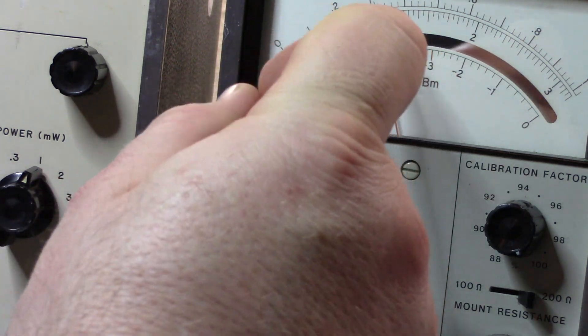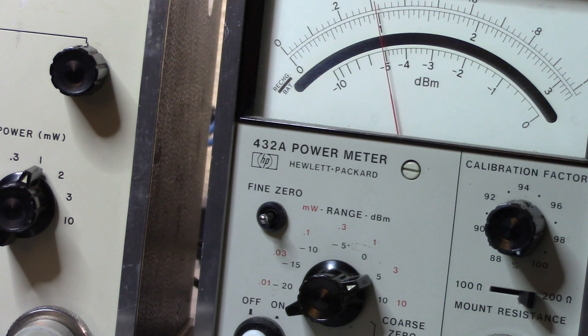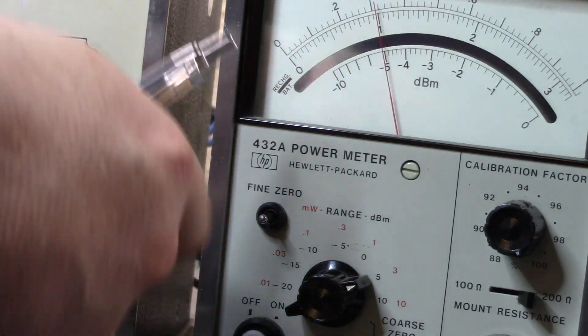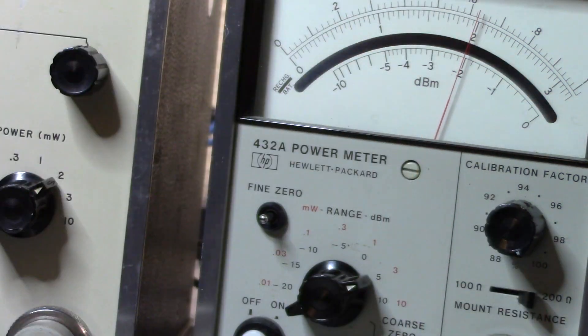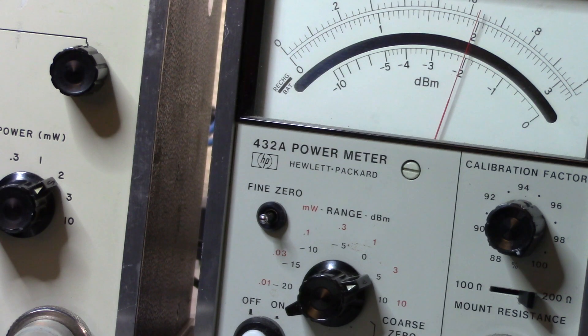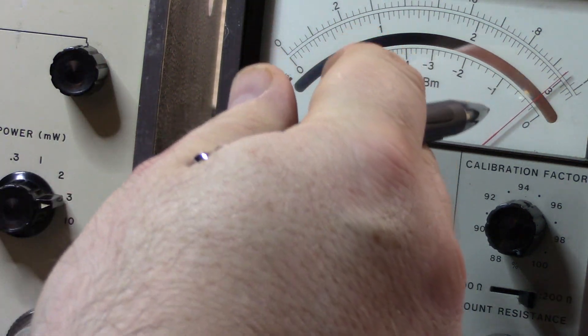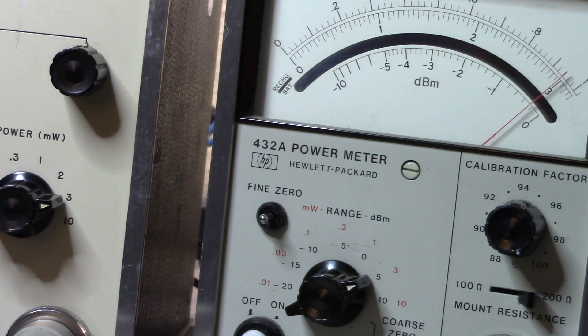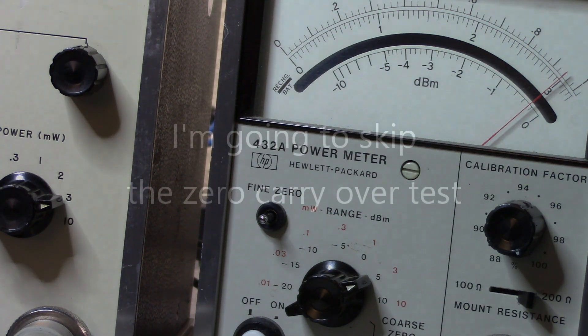Now we should be indicating one milliwatt and we're seeing one milliwatt there, so that's zero points off. When we go to two we should be seeing two and we're pretty damn close there at two, so I'll call that zero effectively as well. When we go to three we should see three and we're very close to three there as well. That's looking all good there.